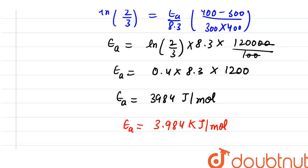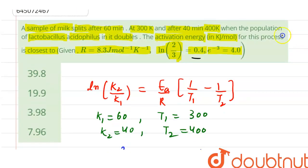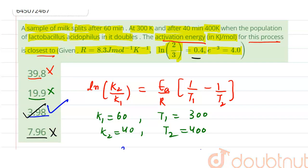Let us see, activation energy for this process is closest to: 39.8, this is not correct. 19.9, this is also not correct. 3.98, so option 3 is the correct answer of this question. Option 4, 7.96, this is also not correct. Option 3 is the correct answer.